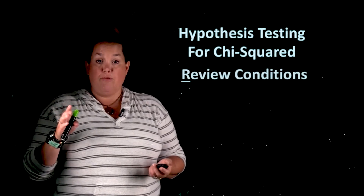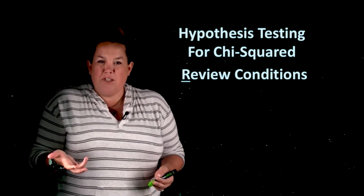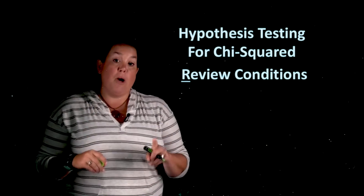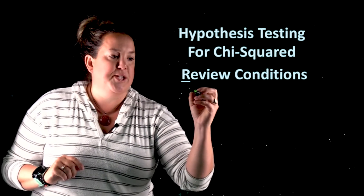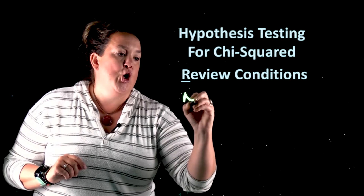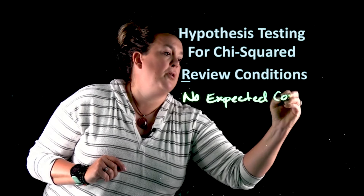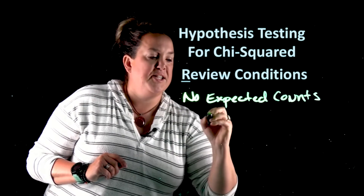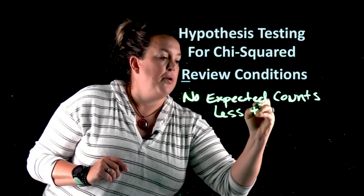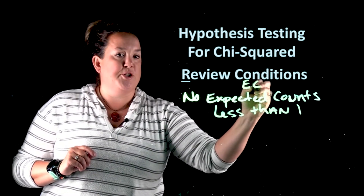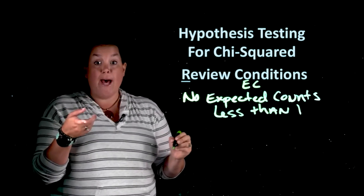Now we're on to the R portion of FRED, which is 'reviewing conditions.' For these problems, conditions are actually pretty specific and these two things have to be true. The first thing is that you have to have no expected counts less than one. Expected counts is often shortened to just EC.